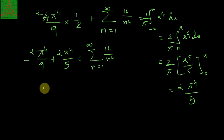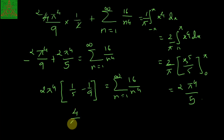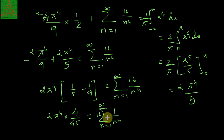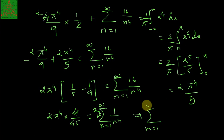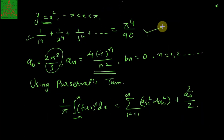So we have 2π⁴/5 = 2π⁴/9 + summation n from 1 to infinity of 16/n⁴. Taking 2π⁴/9 to the other side: 2π⁴/5 − 2π⁴/9 = summation of 16/n⁴, giving 2π⁴·(9−5)/45 = 16·Σ(1/n⁴), that is 8π⁴/45 = 16·Σ(1/n⁴). Cancelling the factors, we get summation n from 1 to infinity of 1/n⁴ = π⁴/90, which was our required expression to show.